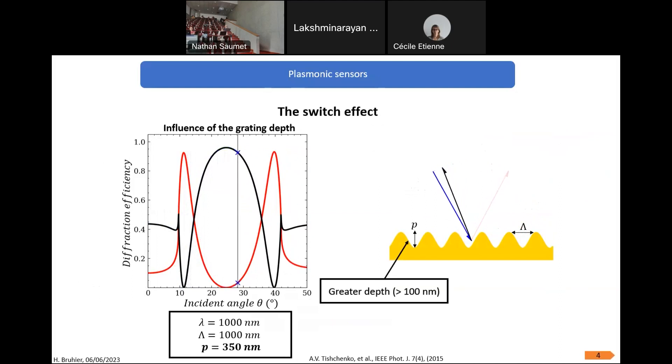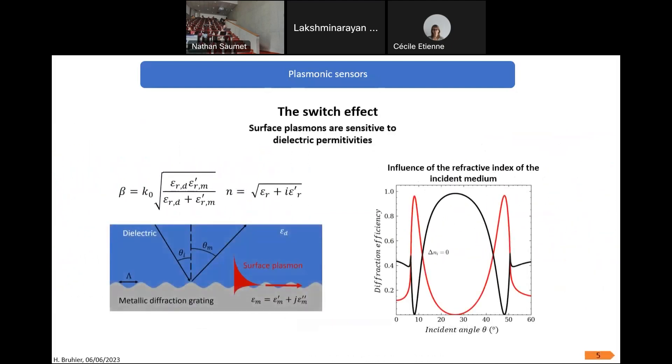The switch effect is characterized by an energy transfer between the minus one order and the zero order. The switch effect has the particularity to have two crossing points, one at your left and the second one at your right. Also, surface plasmons are sensitive to dielectric permittivities and also to the refractive index. Any modification of the dielectric permittivity will induce a modification of our switch pattern characterized by a translation of our two crossing points.